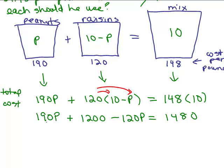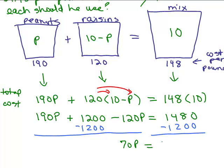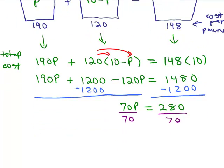All right. And then, let's combine like terms here. And at the same time, let's go ahead and subtract 1200 from both sides. So, on the left side, I have 190P minus 120P. That will be 70P. And on the right side, I'm going to have 280. Almost done. Divide both sides by 70. So, P, well, the zeros could cancel. 28 divided by 7 is 4. So, P is 4.